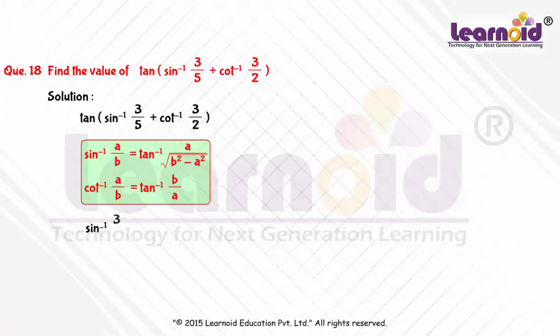So, sin inverse 3 by 5 is equal to tan inverse 3 by square root of 5 square minus 3 square, or tan inverse 3 by 4.